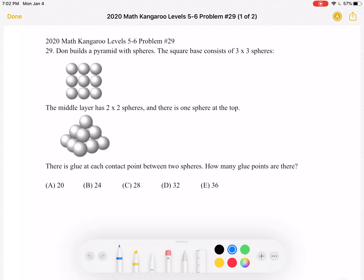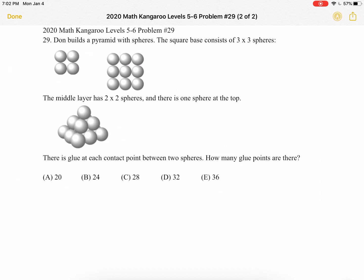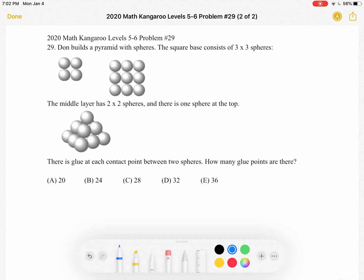This is the problem as it originally appeared on the exam, and here is where we'll be doing the solution. So to start, I've drawn the 2x2 layer of spheres right next to the 3x3 layer of spheres they gave us in the problem in order to better visualize the different levels that make up this pyramid.